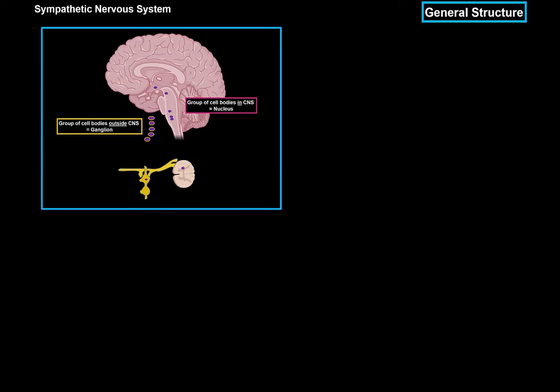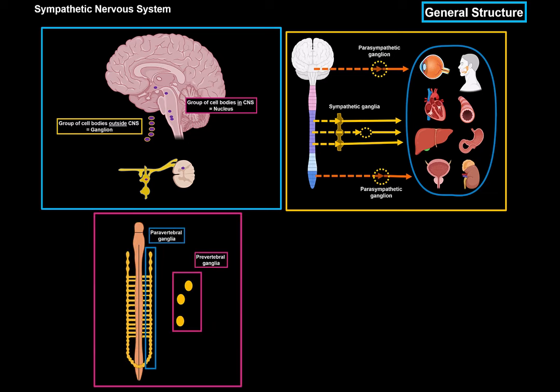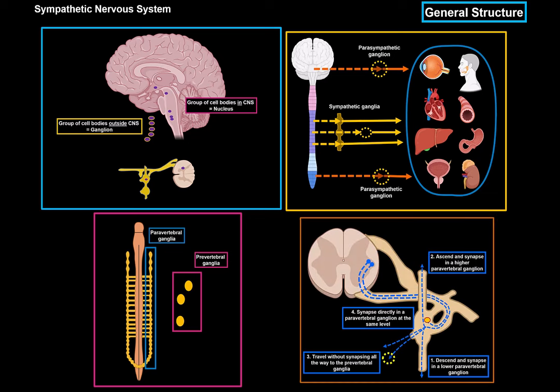So those were the four major things to keep in mind. First: the difference between nucleus and ganglion. Second: where the sympathetic and parasympathetic outflow is located, and the difference between preganglionic and postganglionic fibers. Third: the anatomical relation between sympathetic ganglia — either paravertebral (the sympathetic chain) or prevertebral (like the celiac and superior mesenteric ganglia). Fourth: preganglionic fibers can do four things once they enter the sympathetic chain — go up, go down, leave toward the prevertebral ganglia, or synapse with cell bodies at the same level.